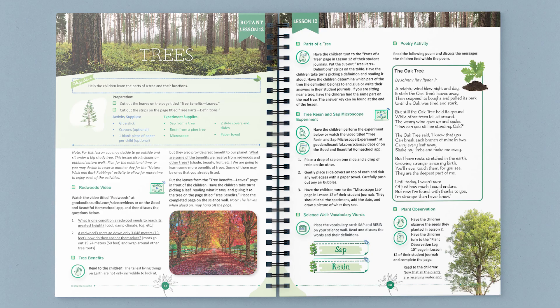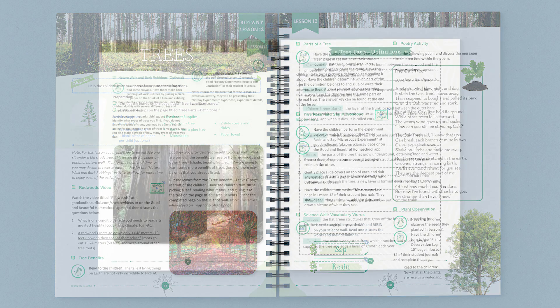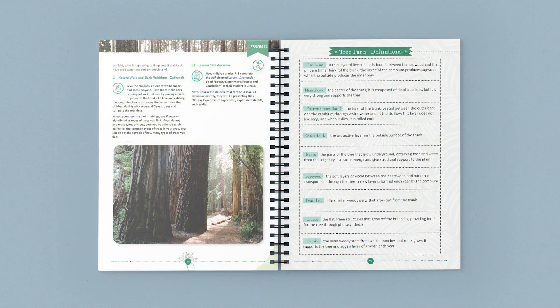All the experiments can be watched on our website or app if you prefer. Next, you will learn two new vocabulary terms and then read and discuss a poem about an oak tree. Students will observe the growth of a plant from an earlier lesson and go on an optional nature walk to observe trees and make bark rubbings.